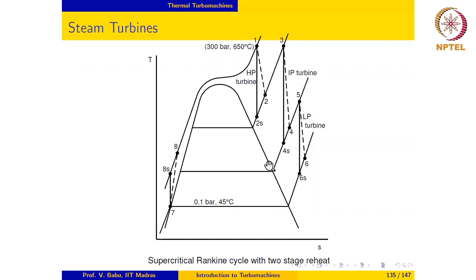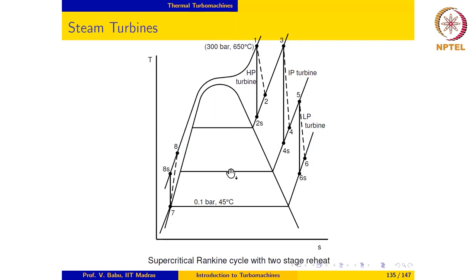The most significant aspect of the cycle, in so far as steam turbines are concerned, is the expansion ratio that the steam goes through from state one all the way to state 6s. The steam is expanded from a pressure of 300 bar to 0.1 bar, which means the expansion ratio in this case is 300 divided by 0.1, which is 3000.